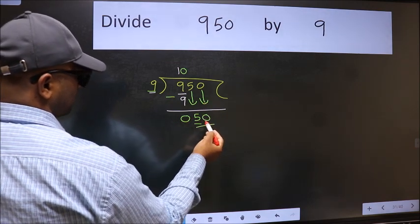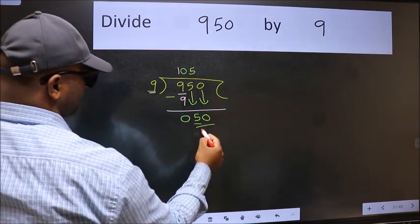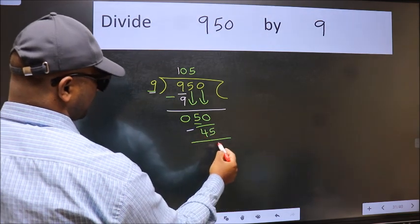Now 50. A number close to 50 in 9 table is 9 times 5 equals 45. Now we should subtract. We get 5.